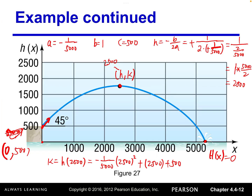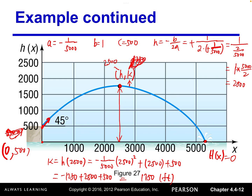Simplifying, we get negative 1250 plus 2500 plus 500, which equals 1750 feet. The y-coordinate of the vertex k equals 1750. Therefore, the answer to part (a): the maximum height of the projectile is 1750 feet.